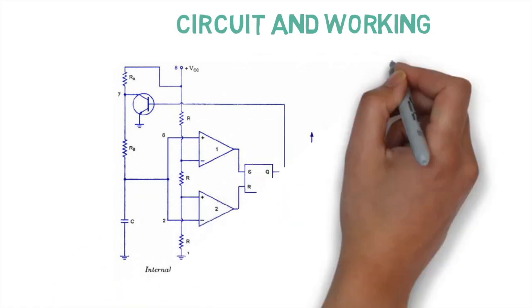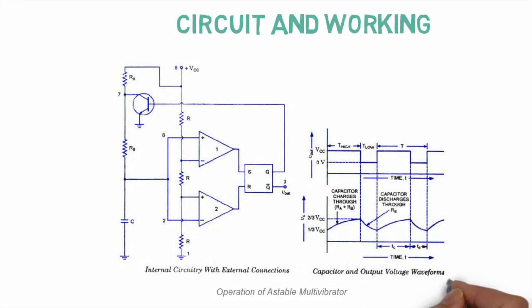The A-stable multivibrator circuit consists of comparator A, comparator B, three resistors of 5 kilo ohms each and a capacitor of 0.01 micro farads. Now, let us see the working of a stable multivibrator.